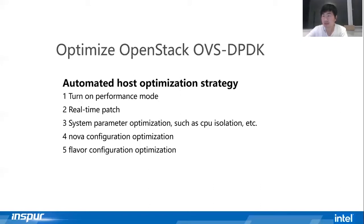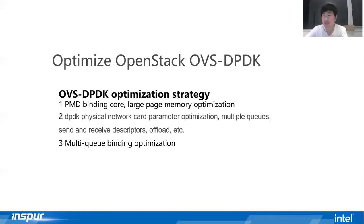Next, we will look at what OVS-DPDK itself needs to optimize. After continuous optimization testing, we manually tune OVS-DPDK in three aspects. First, PMD polling cores, large page and huge page memory — these are conventional tuning methods that most practitioners will be familiar with, so I will not elaborate further here.